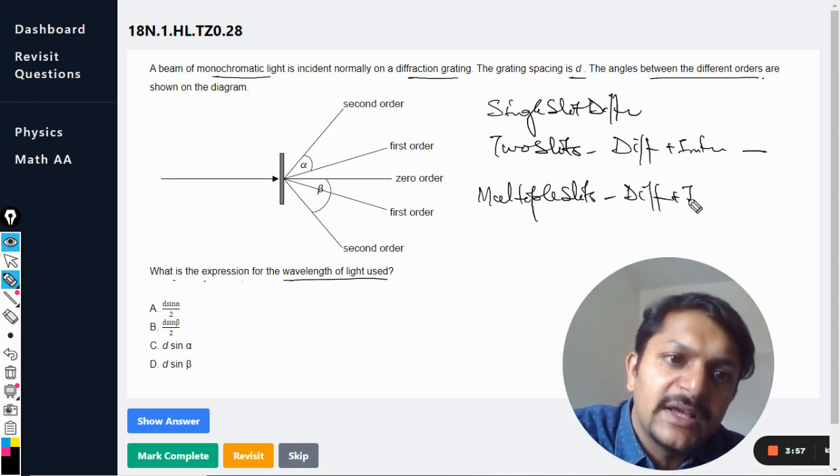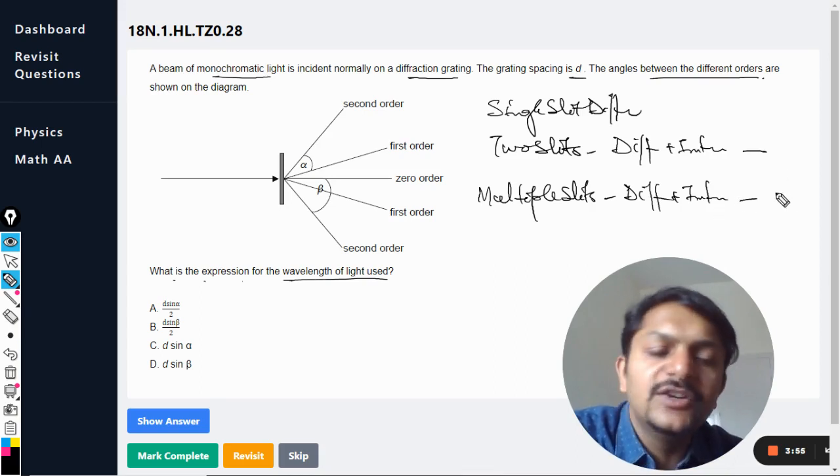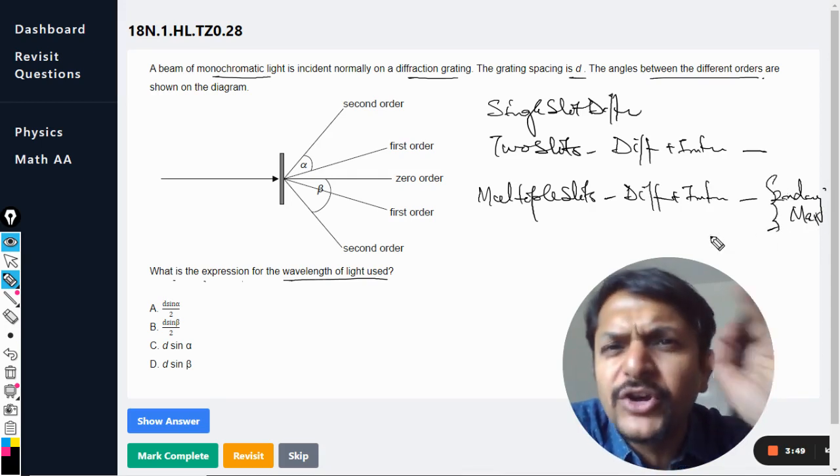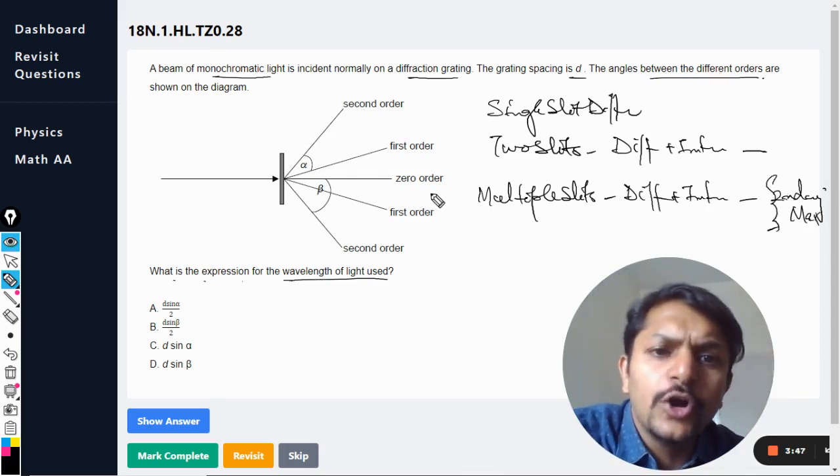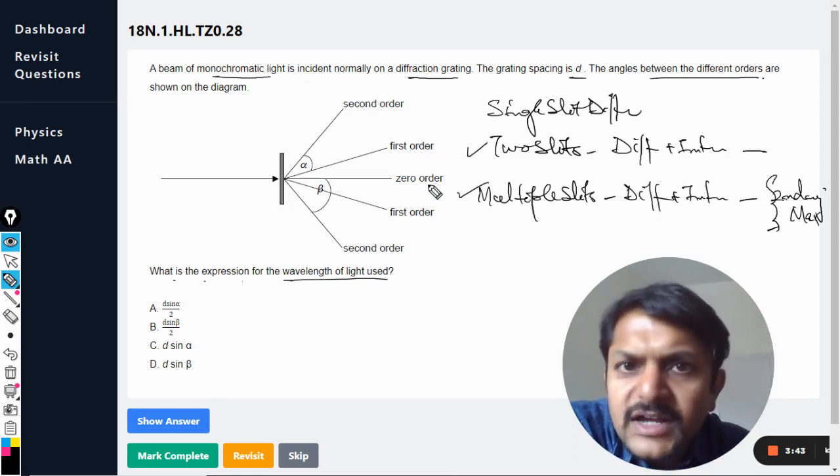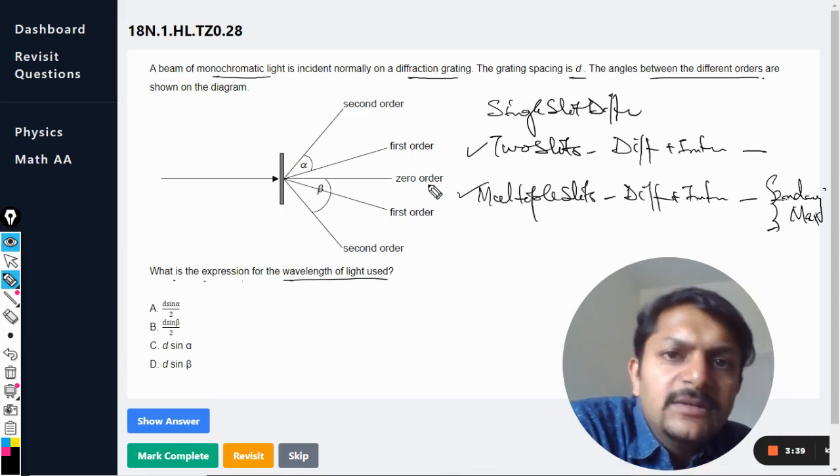The only thing is that now we also talk about the secondary maximas, but they are not playing any important role in our calculations. So multiple slits or two slits, there is no difference. Formulas are the same, angles are the same, theta is the same, lambda by d, everything is same.